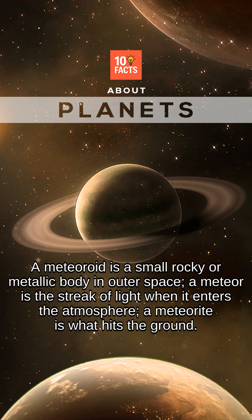A meteoroid is a small rocky or metallic body in outer space. A meteor is the streak of light when it enters the atmosphere. A meteorite is what hits the ground.